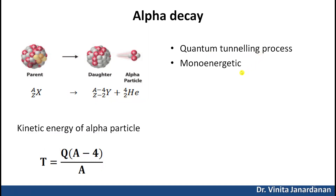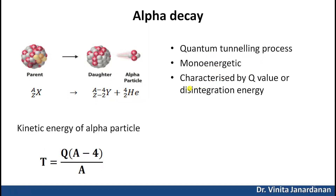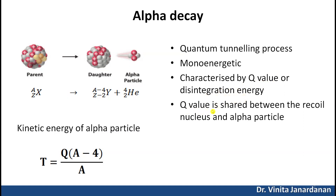The alpha particles appear in one or more energy groups that are monoenergetic. The decay process is characterized by a fixed energy difference or Q value, which is also called the disintegration energy. This Q value is shared between the recoil nucleus and the alpha particle, so that each alpha particle appears with the same energy given by Q multiplied by (A minus 4) divided by A, where A is the mass number of the parent nucleus.